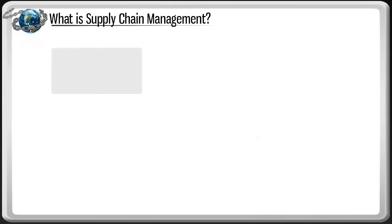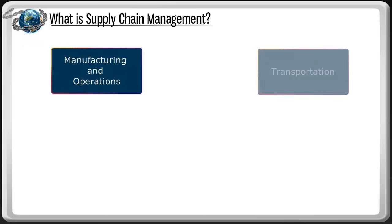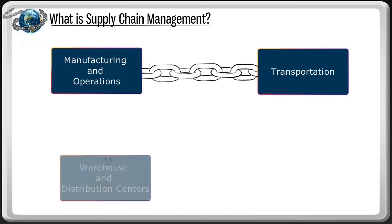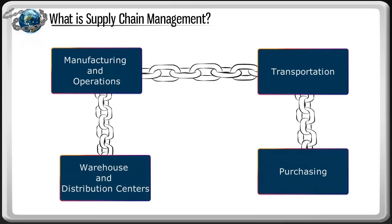There are four main links that make up the supply chain. They are manufacturing and operations, transportation, warehouse and distribution, and purchasing. Let's take a look at the main links.